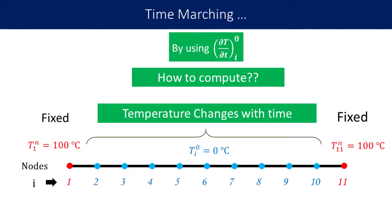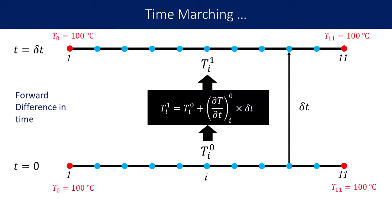How do we compute them? We use the time derivative. To compute the temperature at time step delta T, we find the increment in temperature over the time step and add it to the temperature at T equal to zero. Therefore, the temperature at T equal to delta T is the sum of the temperature at T equal to zero plus an increment. The increment is expressed as the product of delta T and the time derivative of T. So: T_i^1 equals T_i^0 plus delta T times the time derivative at i, 0.